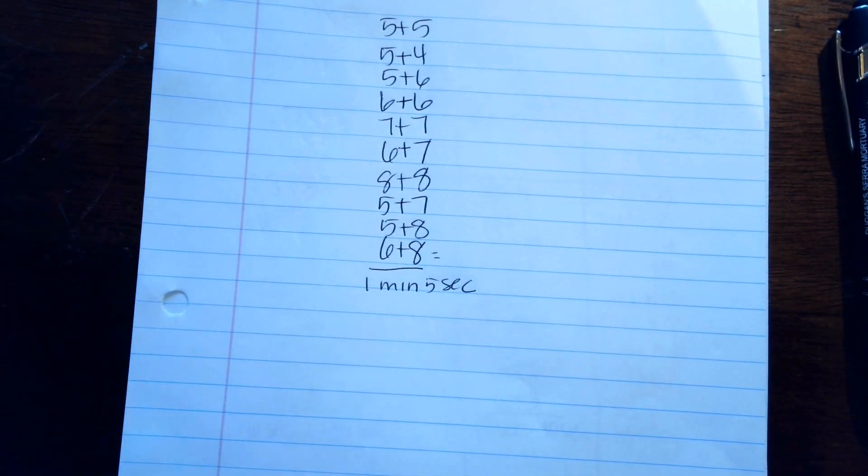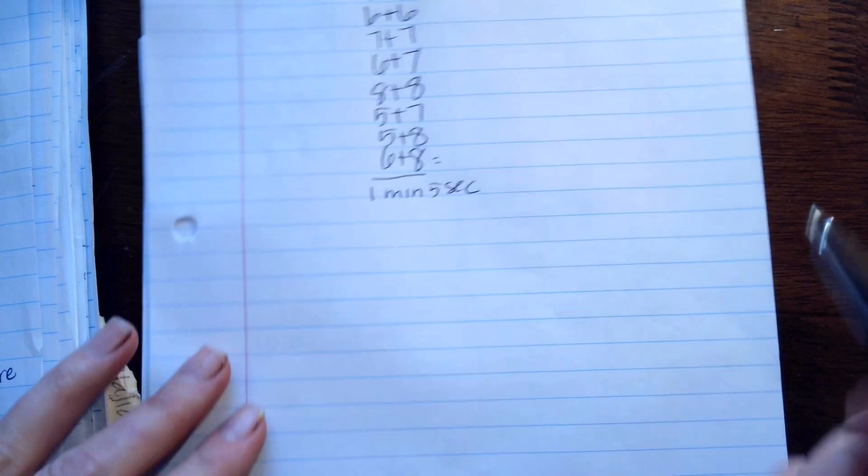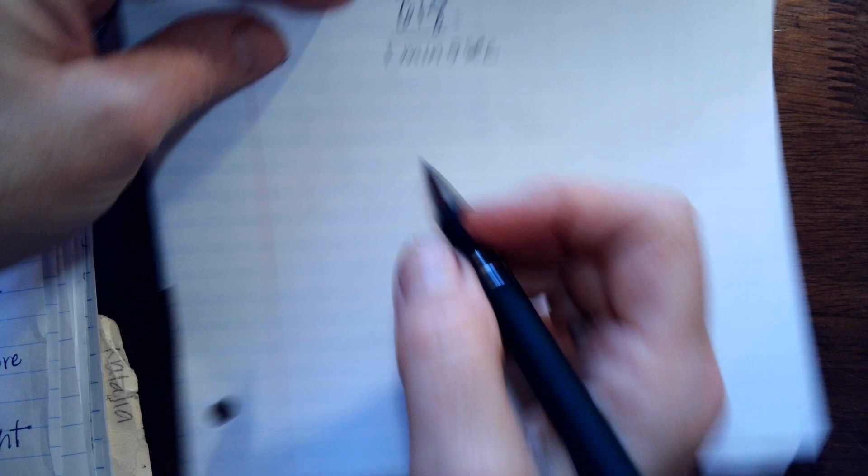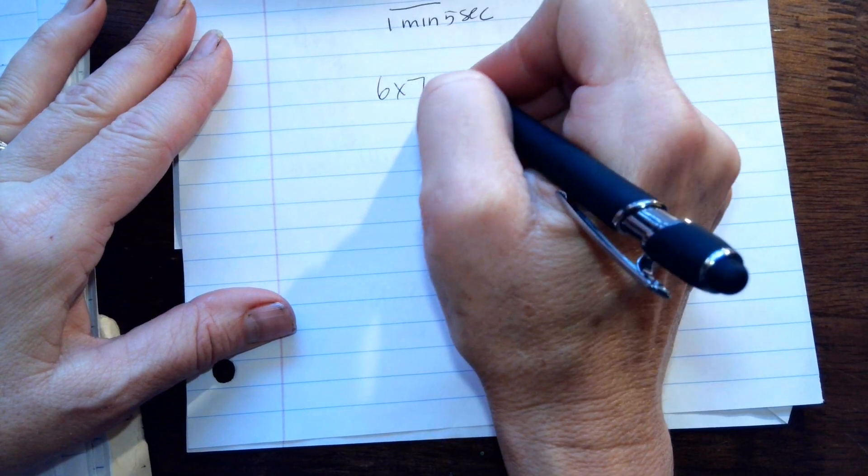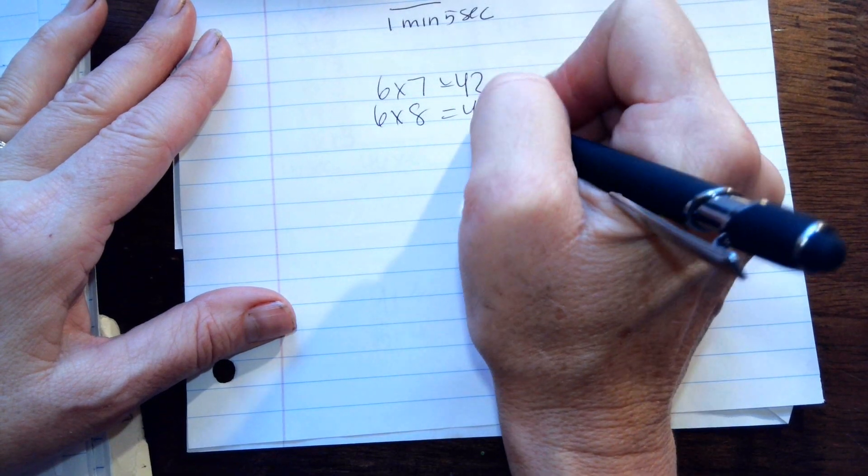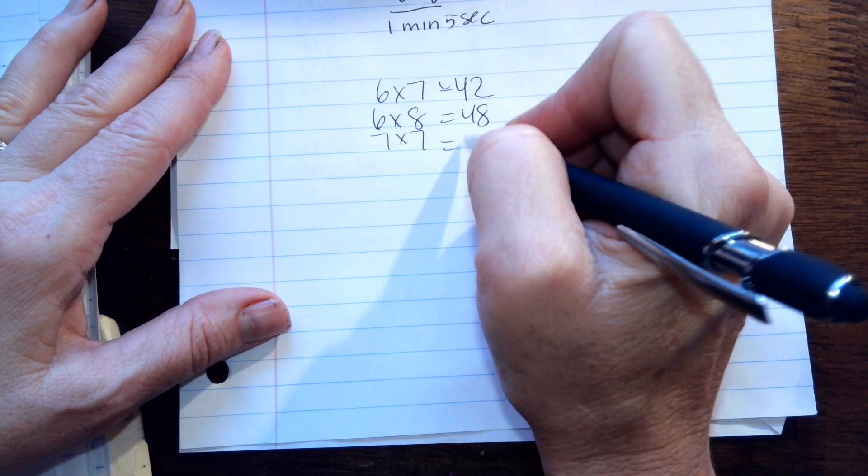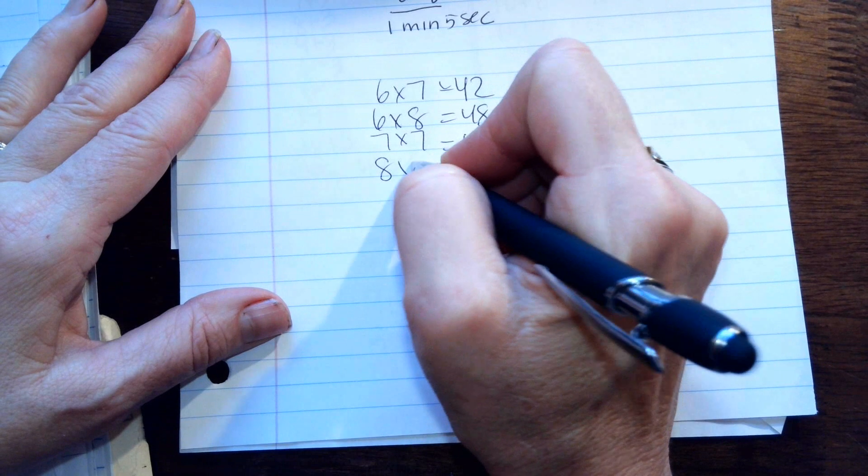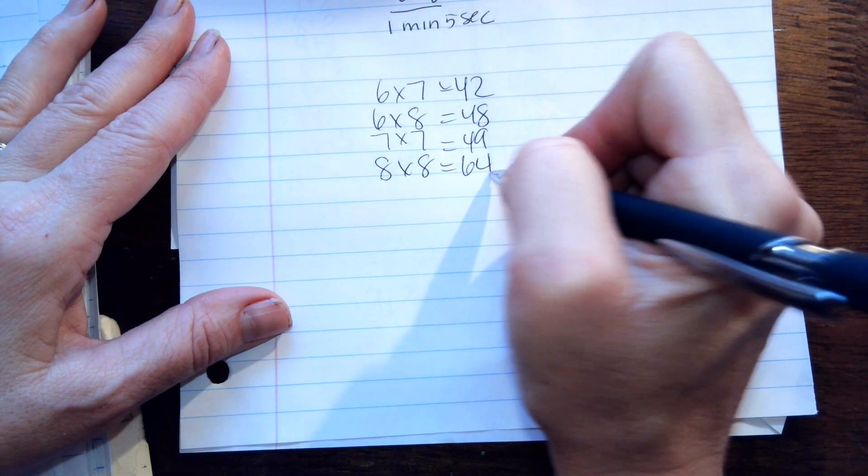I'm going to give you some multiplications too. So we're going to do 6 times 7 is 42, 6 times 8 is 48, 7 times 7 is 49, 8 times 8 is 64.